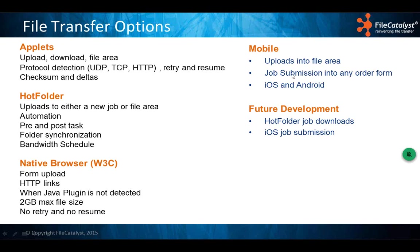On the mobile side, you can find our application on iTunes or Google Play, search for File Catalyst, point it to your File Catalyst Workflow instance and you're ready. Future development includes hot folder job downloads — so when files are sent to a user with a hot folder attached, it will automatically initiate a download. Also planned is iOS job submission; currently on iOS you can only upload to a file area.